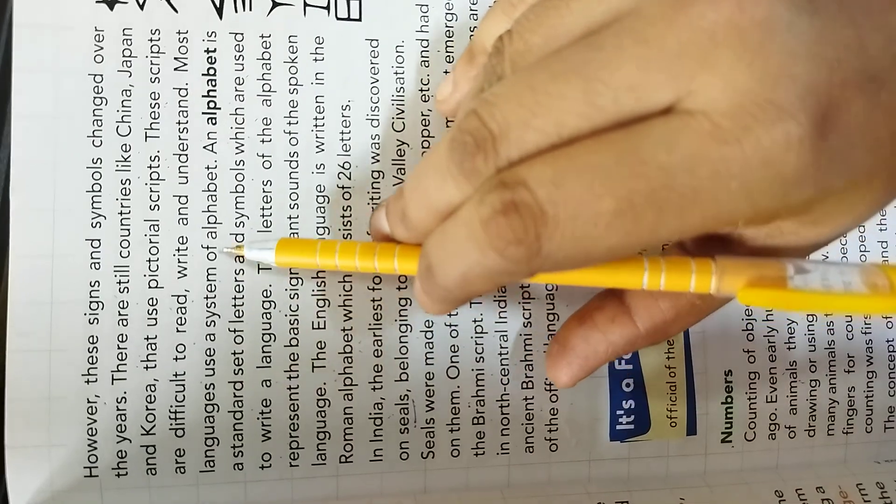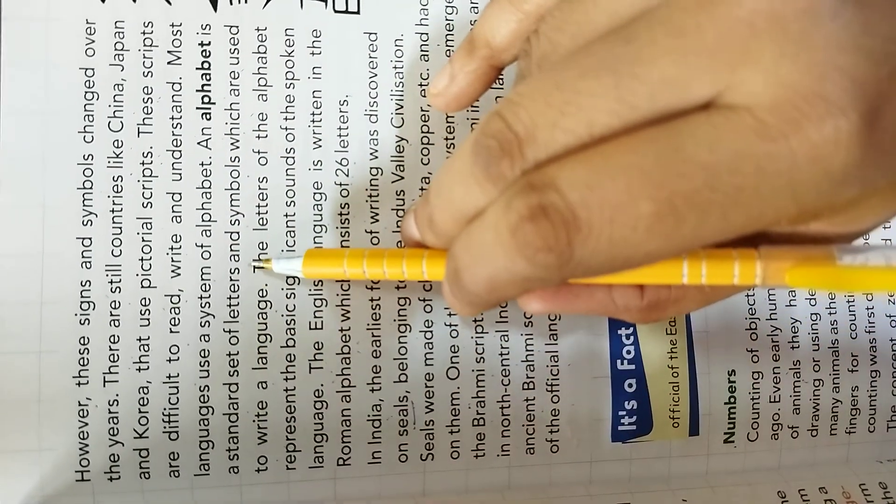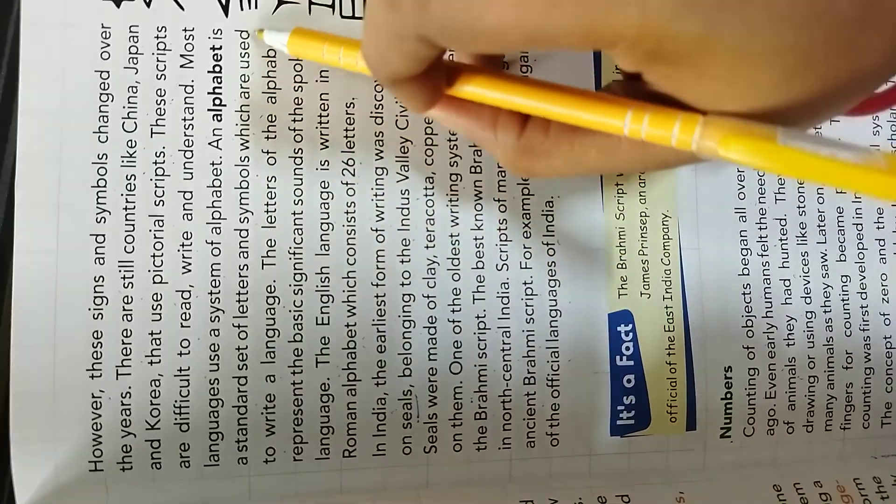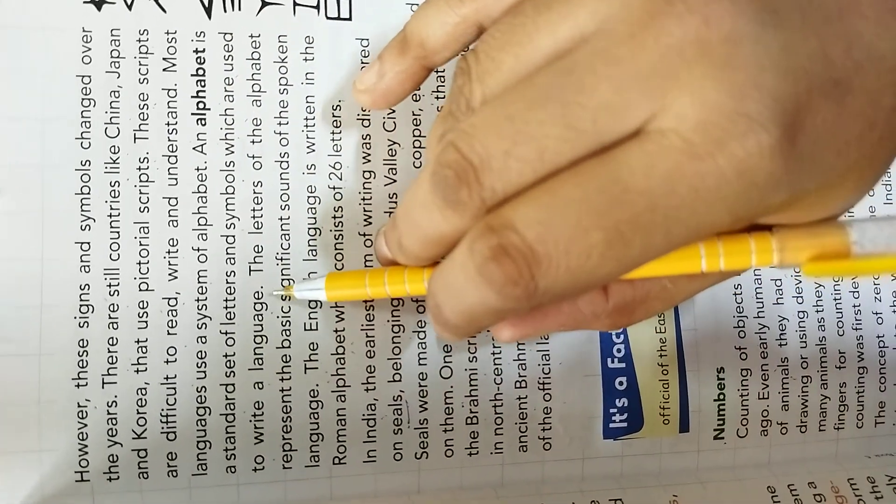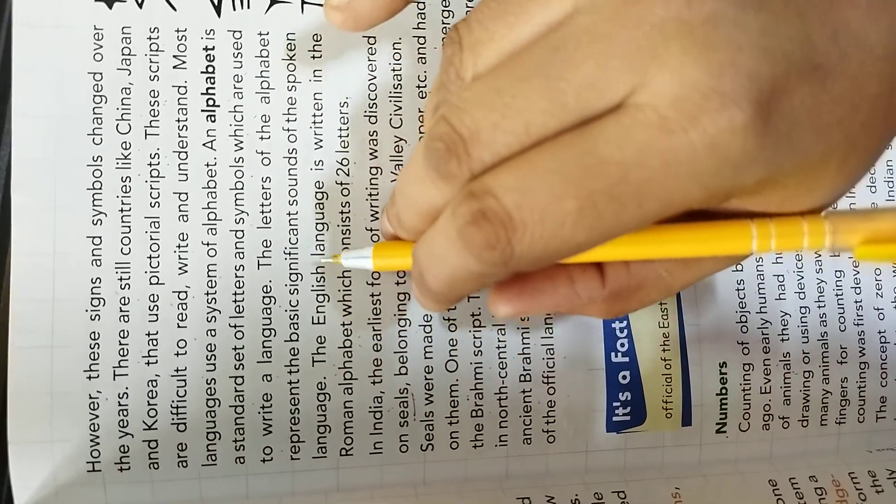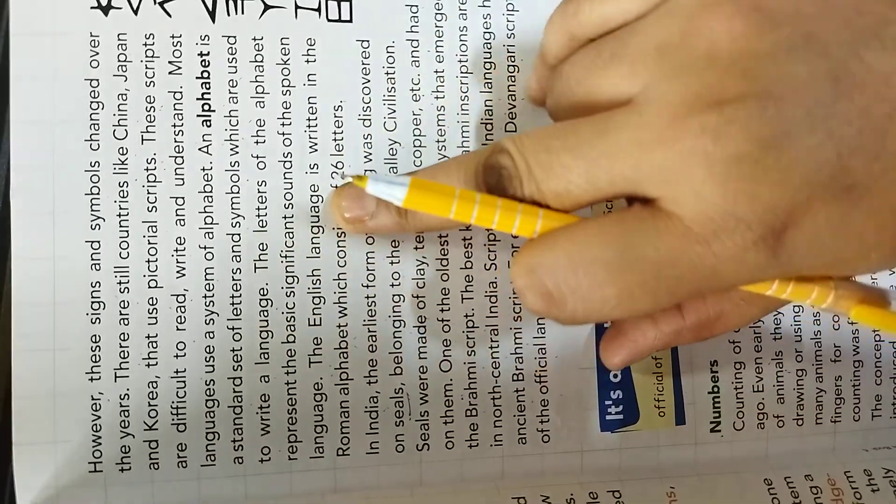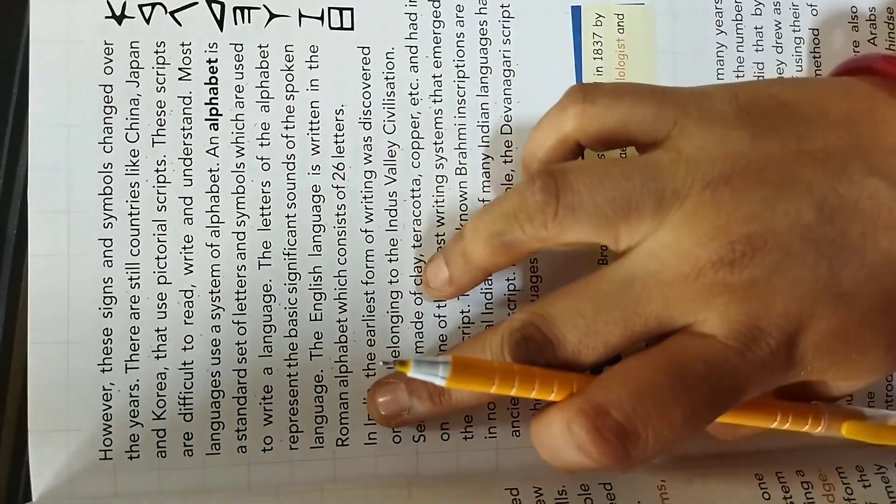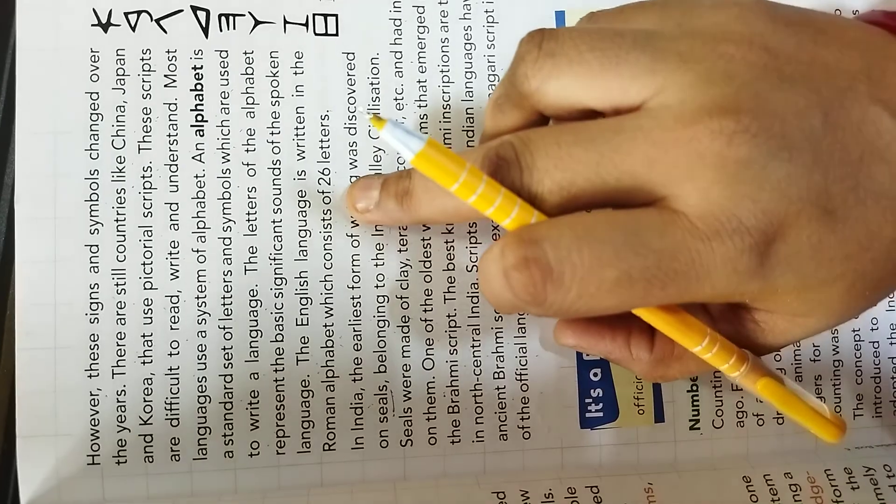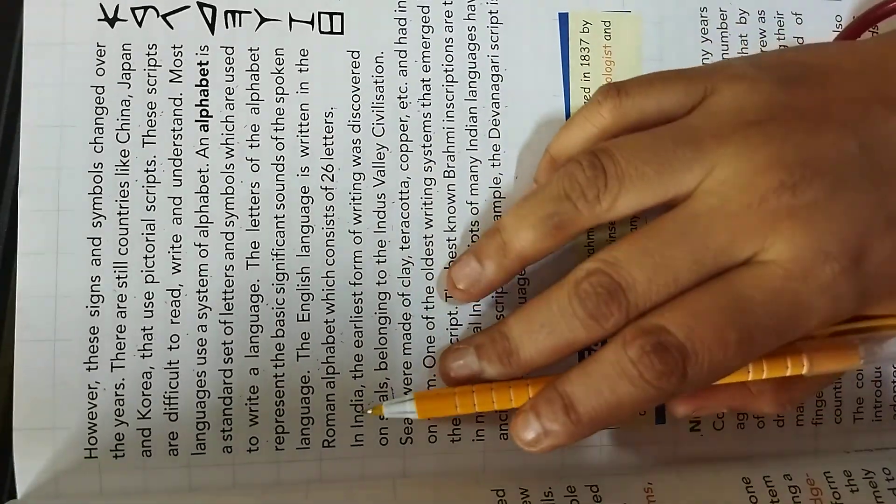Most languages use a system of alphabets. An alphabet is a standard set of letters and symbols which are used to write a language. The letter of the alphabet represent the basic significant sound of the spoken language. The English language is written in the Roman alphabet which consists of 26 letters.